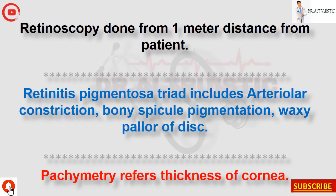Retinitis pigmentosa triad includes arteriolar constriction, bony spicule pigmentation, and waxy pallor of the disc. Pachymetry refers to the thickness of the cornea.